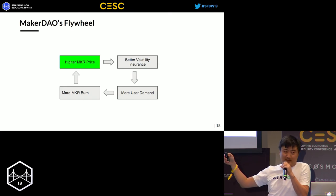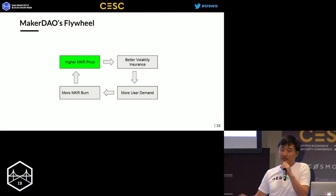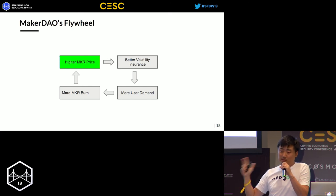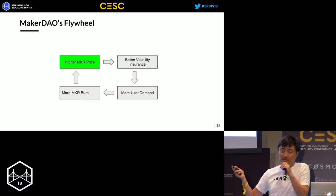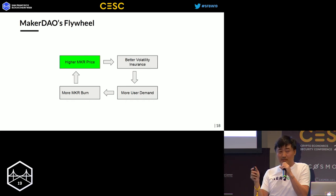Why is this important? Because everybody can copy you — they can fork you, launch their own network, access your markets. But there are two things people can't copy: your market capitalization, and for proof-of-work projects, your hash power. So you want to focus on growing things that people cannot copy, and utilize those to grow your market.